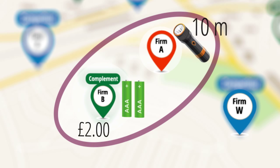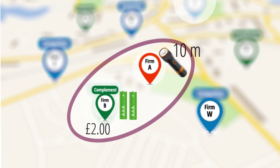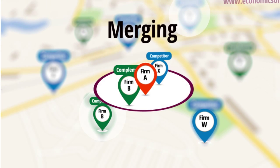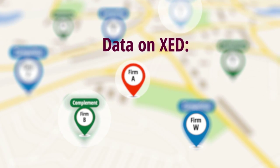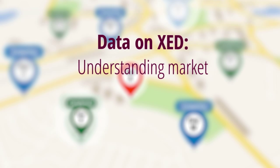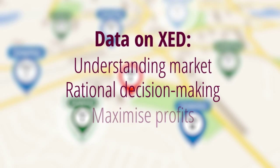In many situations, firms can gain more control over their market by merging with competitors or with suppliers of complementary products, or indeed they may develop their own complementary products, such as Google developing its own smartphone, the Pixel. Clearly, information on cross-elasticity is very useful in that it helps firms gain a deeper understanding of their market, enabling them to make more rational decisions about the best way to allocate their scarce resources and to maximize profits.